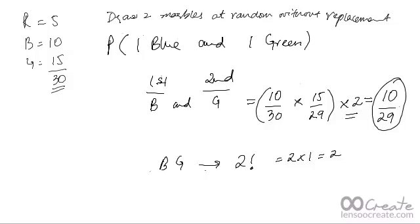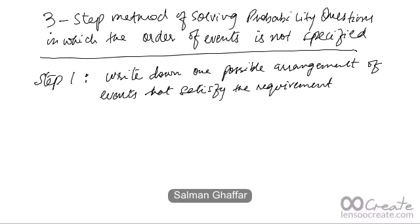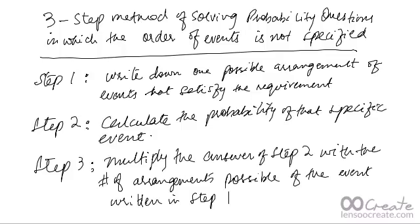Here is the three-step method for solving probability questions in which the order of events is not specified. Step 1: write down one possible arrangement of events that satisfies the requirement. Step 2: calculate the probability of that specific arrangement. Step 3: multiply the answer from Step 2 by the number of possible arrangements of the events written in Step 1. This three-step process helps you find probabilities when the order of events is not specified.